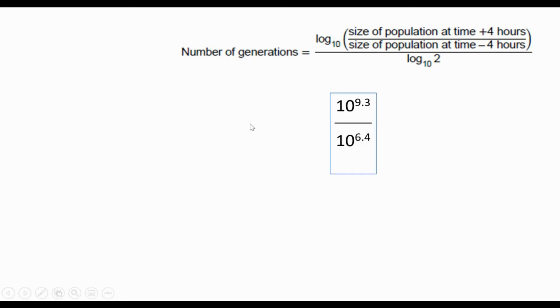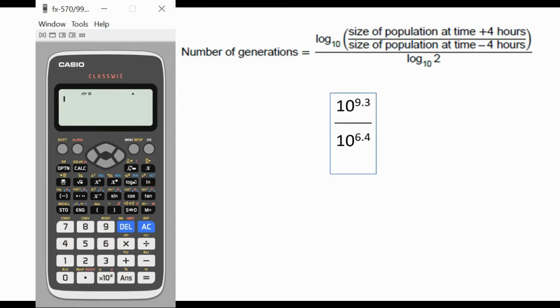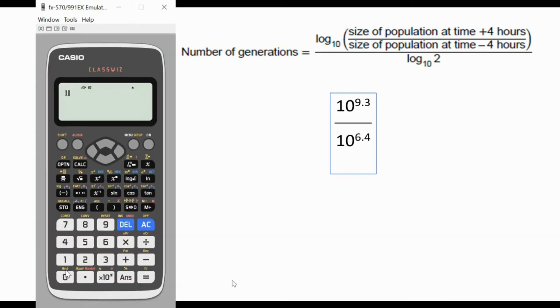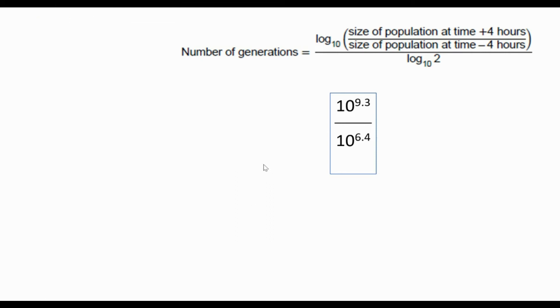First of all, we need to divide 10^9.3 divided by 10^6.4. Here we have a Casio calculator, most students have this type of calculator. You can use any type of calculator though, they'll all have the same features. What we've got to do is use the shift button and then you see the 10 there, ten to the 9.3.